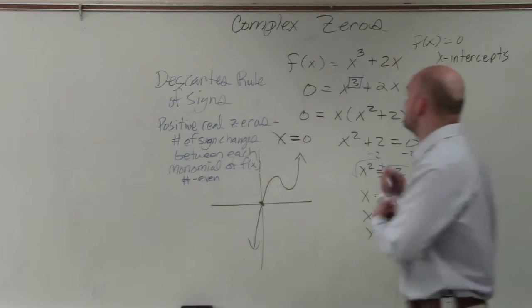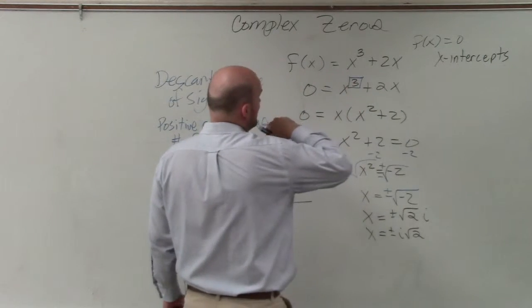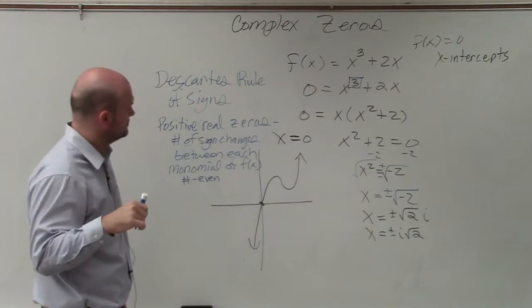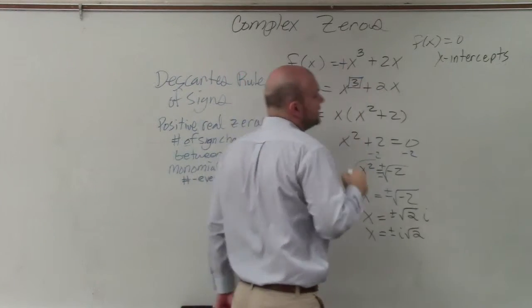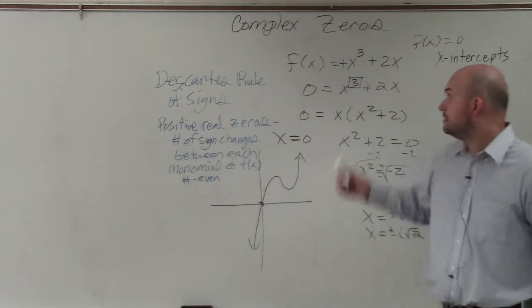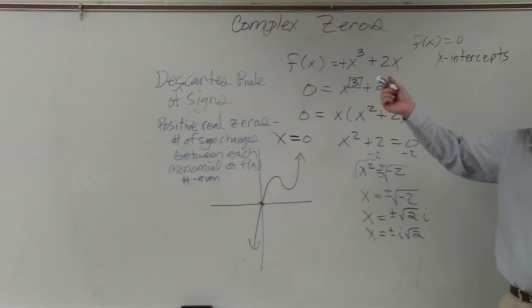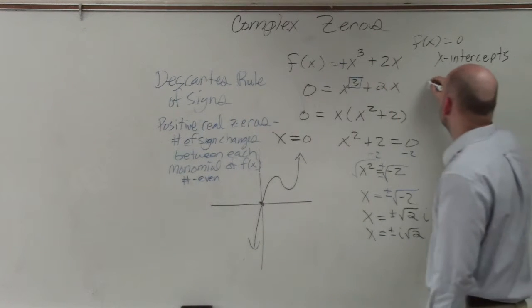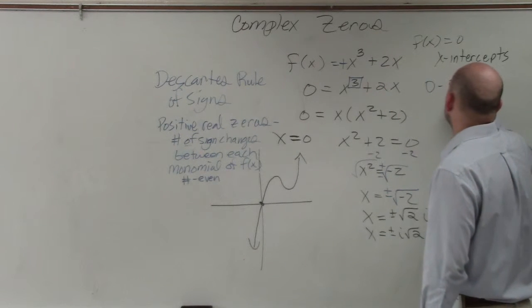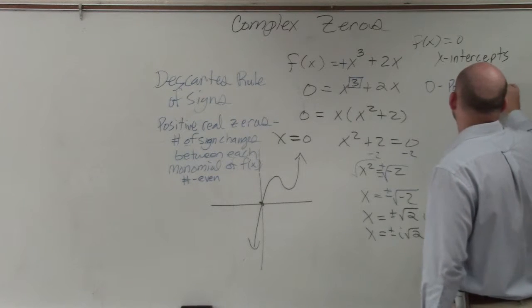So let's go and look at this. Oh, OK. Here I have positive and I have positive. Is there any sign changes? So guess what? There's zero positive real zeros.